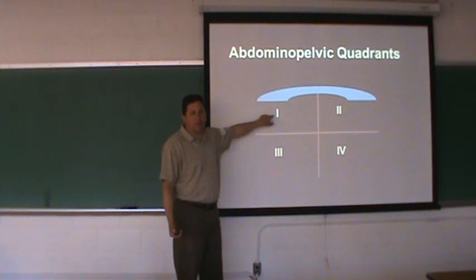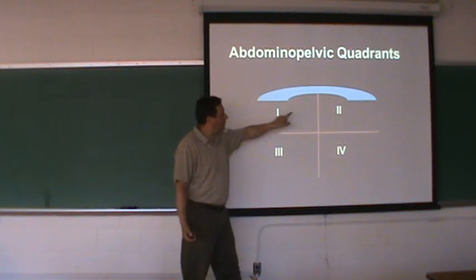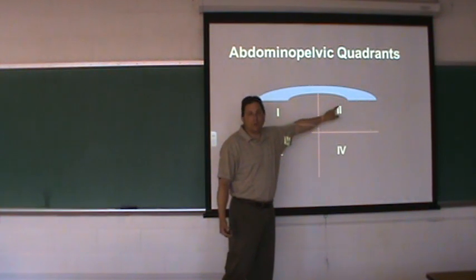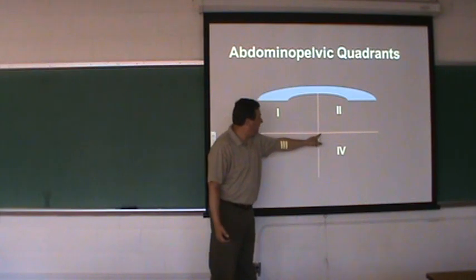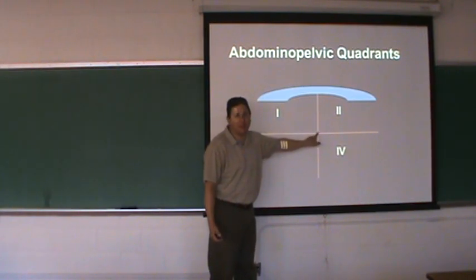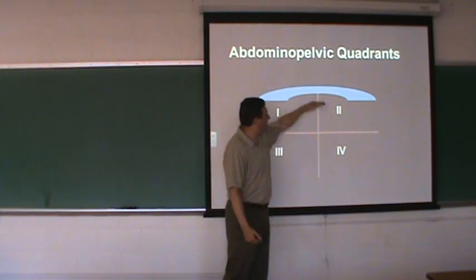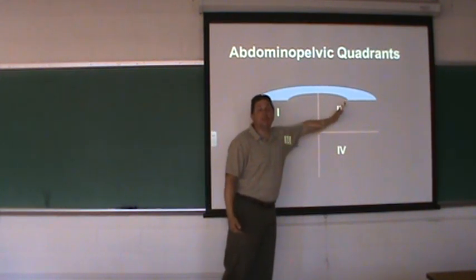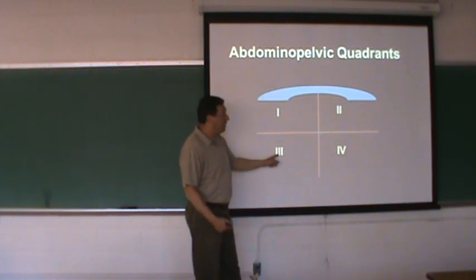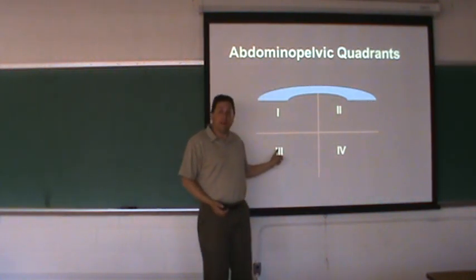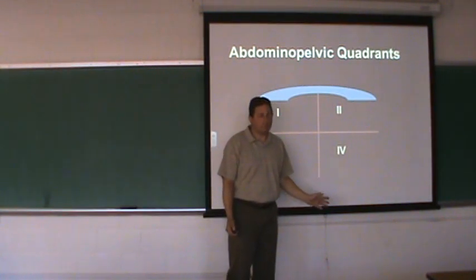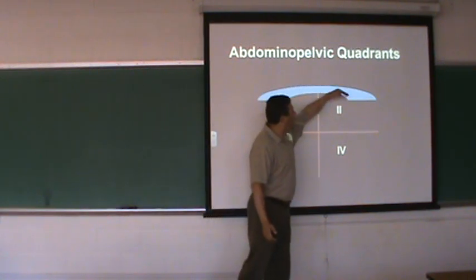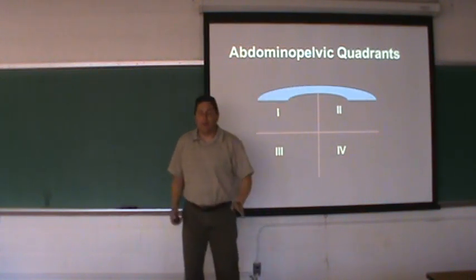Quadrant two is the upper left quadrant because it's above the transverse line. Think of the middle, what I call the crosshairs — the center of the plus sign — that's the belly button. Above it and to the left is your upper left quadrant two. Quadrant three will be the lower right quadrant, and quadrant four is the lower left.